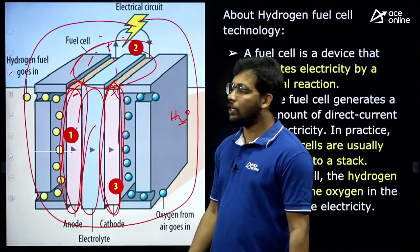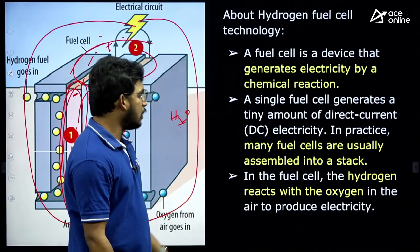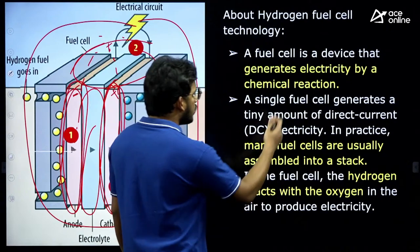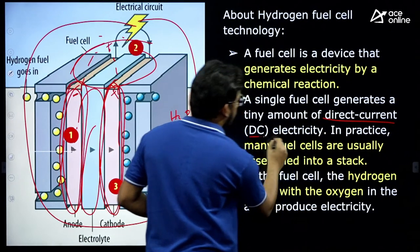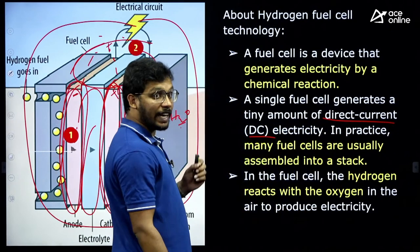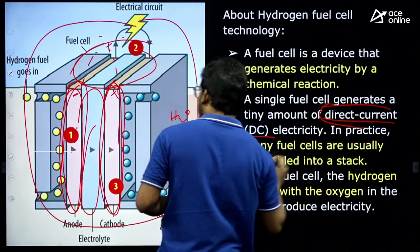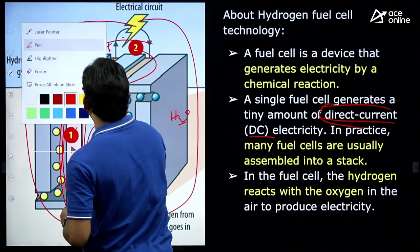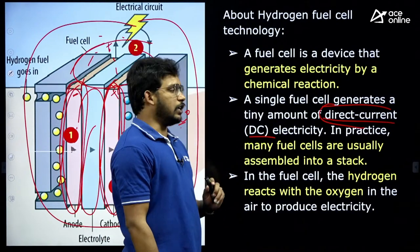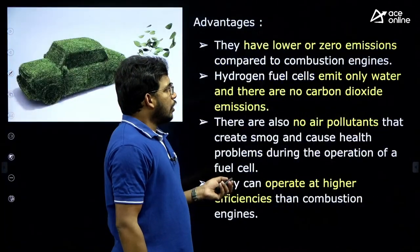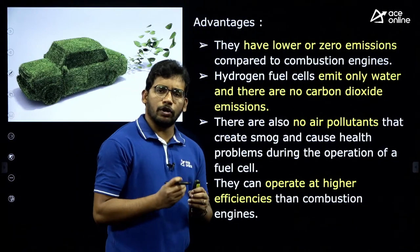Between the two electrodes there is an electrolyte which enables the reaction. Hydrogen gas reacts with oxygen — positive and negative — and converts into H₂O, so water is released. Beyond electricity, water is also a byproduct of this reaction. The energy released is direct current — this is very important — it is not alternating current, it is direct current.